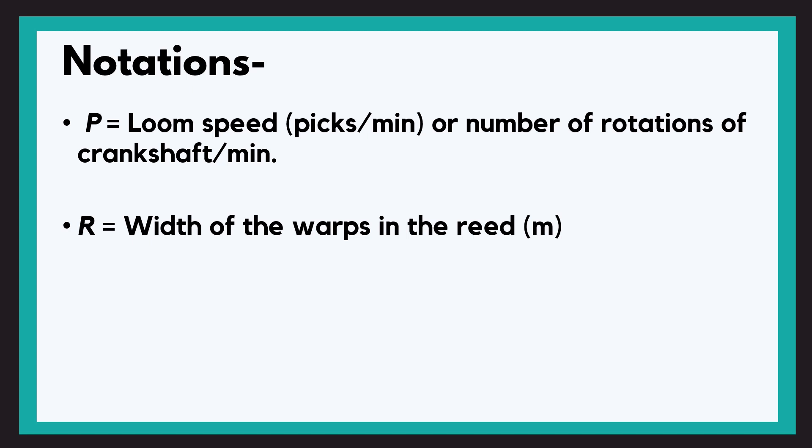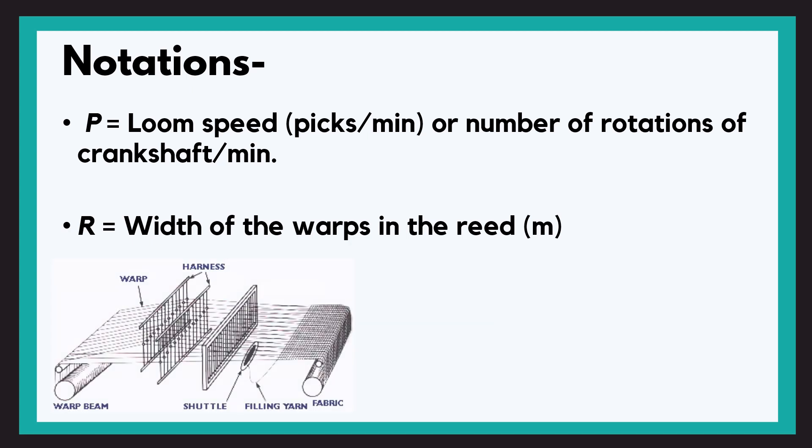Coming down to the next one, that is R, the width of the warp in the reed or the reed width. This is also the distance the shuttle has to cover to insert one pick. Have a look at the warps in the reed in the diagram to have a clear idea.